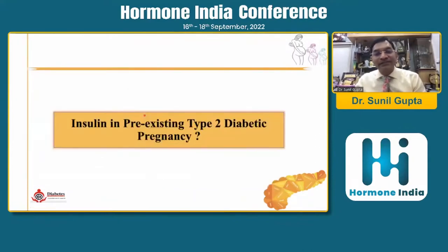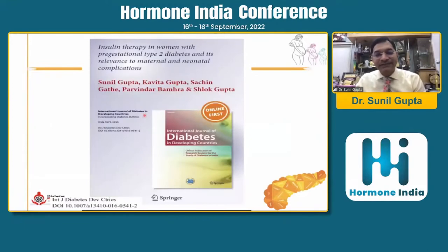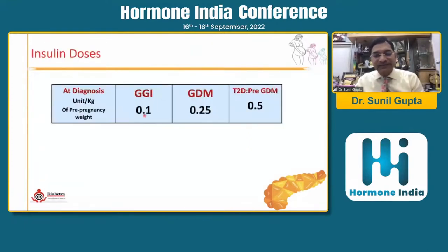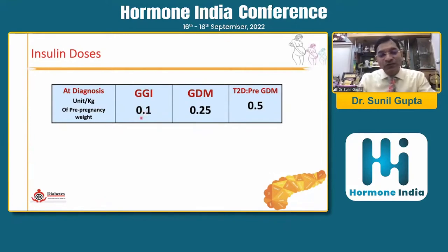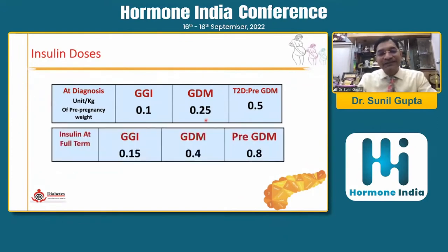We have some data to share. In our GGI, GDM, and pre-gestational type 2 diabetes patients, GGI — gestational glucose intolerance, defined as values between 120 to 140 after glucose challenge — requires around 0.1 unit per kg body weight at the time of diagnosis; GDM requires around 0.25 unit; and pre-gestational type 2 diabetes requires 0.5 unit per kg body weight. These doses increase from 0.1 to 0.15, 0.25 to 0.4, and 0.5 to 0.8 — almost one and a half times increase as pregnancy advances to delivery.